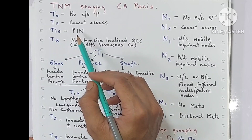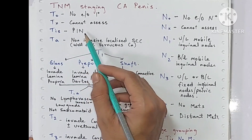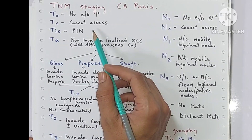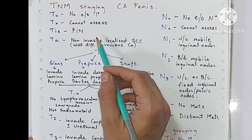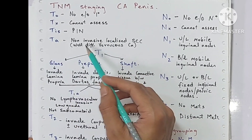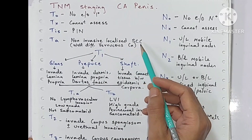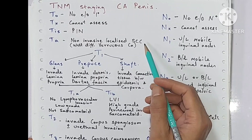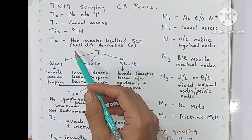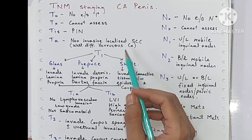Tis is penile intra-epithelial neoplasia, or carcinoma in situ. Ta is non-invasive localized squamous cell carcinoma — it is a well-differentiated verrucous carcinoma.